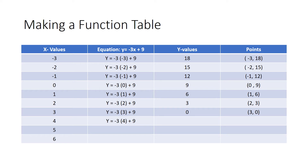In the eighth row I have an x value of four. My equation becomes negative three times four plus nine. I type that in the calculator and get an answer of negative three. I take the x value four and the y value negative three and put it into the points column as four, negative three.